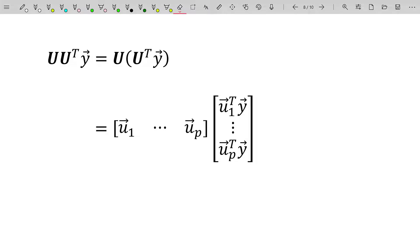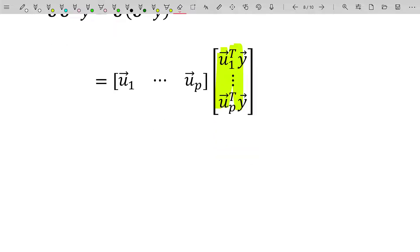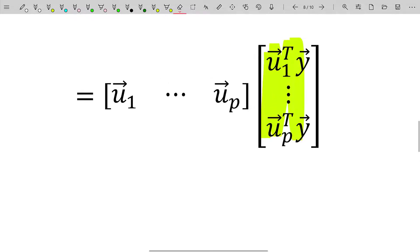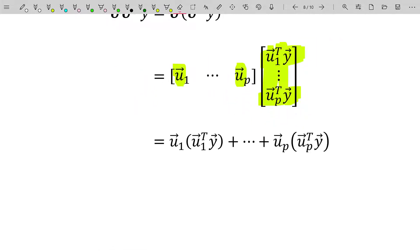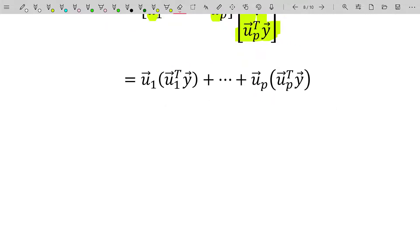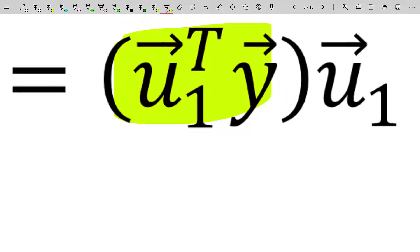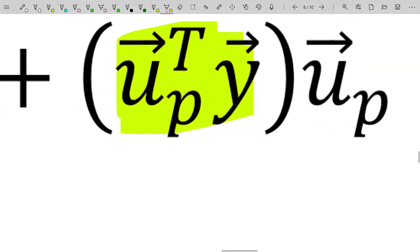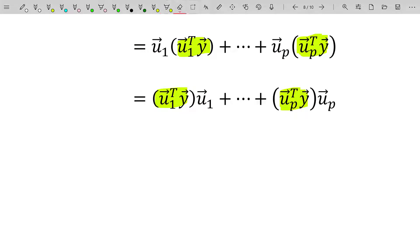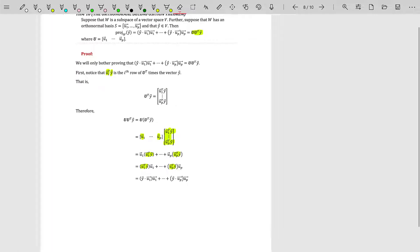So now we have the matrix U, which is u1 dot dot dot to u sub p as column vectors times this vector right here. But way back when, when we first learned to multiply a matrix times a vector, we learned that this product would be a linear combination of the sum of these column vectors where the weights of those linear combinations were the entries of this vector right here. That is, that product would become this. And we can always rewrite that as the following because each of these are just scalars. So I'm just moving those scalars in front of the vectors.